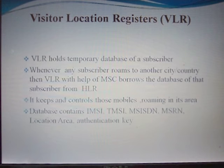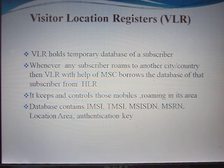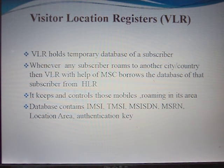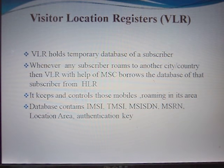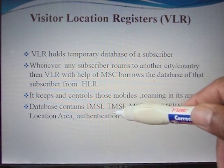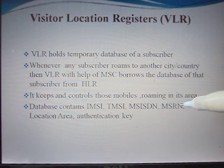The Visitor Location Register (VLR) holds a temporary database of a subscriber. Whenever any subscriber roams to another city or country, the VLR with the help of MSC borrows the database of that subscriber from the Home Location Register. VLR keeps and controls those mobiles which roam in its area. The database contains the same fields as in HLR: MSISDN, TMSI, MSRN Number, Location Area, and Authentication Key.